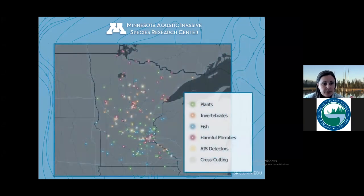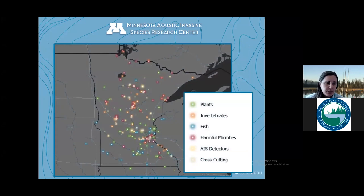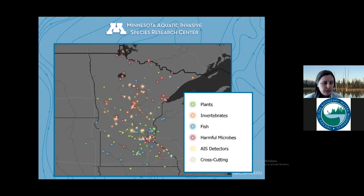We are the only entirely AIS-focused research center of its kind in the U.S. right now, and we house arguably the most concentrated brain power on AIS solutions in the country, maybe even the world. Although I'm going to start focusing on AIS issues and species affecting northern Minnesota and the Boundary Waters, I want to make it clear that we work across the entire state and across six broad research categories.